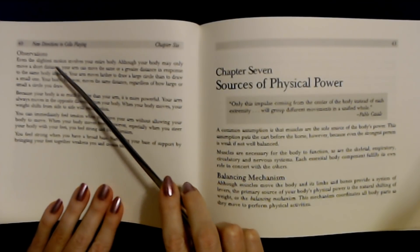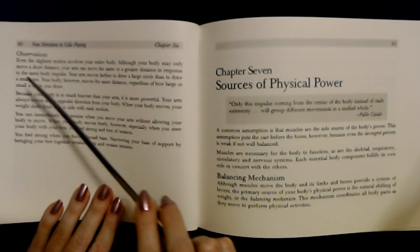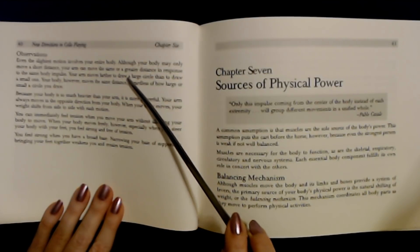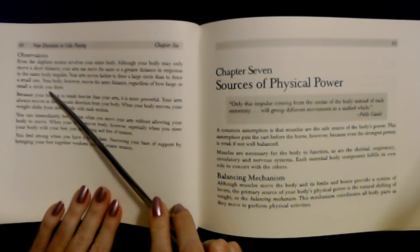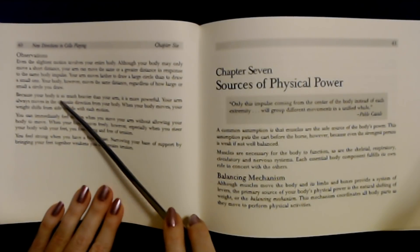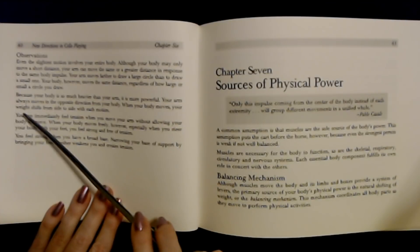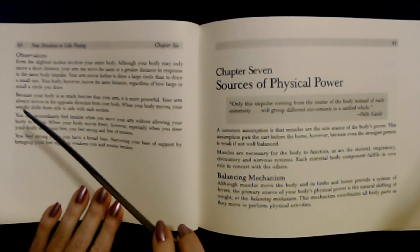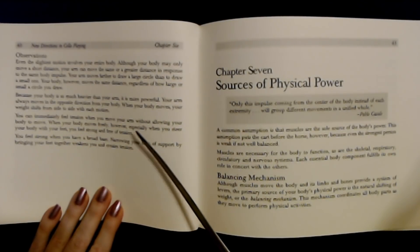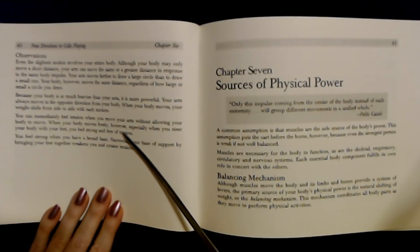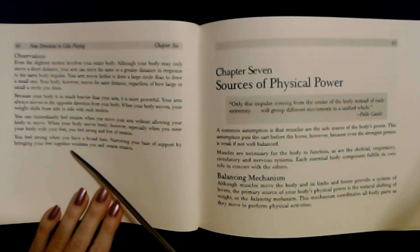Observations. Even slow motion involves your entire body. Your arm can move a greater distance in response to the same body impulse. Your arm moves farther to draw a large circle than to draw small, but your body moves the same distance regardless. Because your body is so much heavier than your arm, it's more powerful. Your arm always moves in the opposite direction from your body. Your body moves and your weight shifts from side to side with each motion.